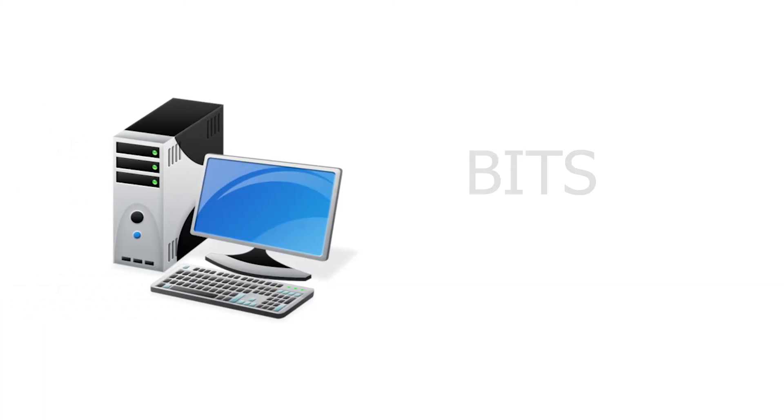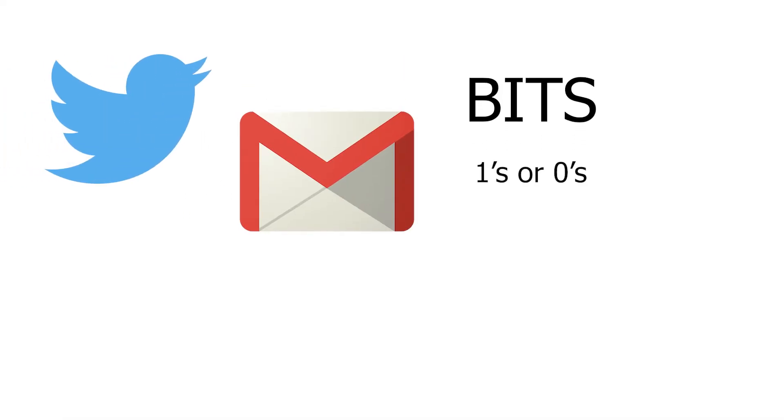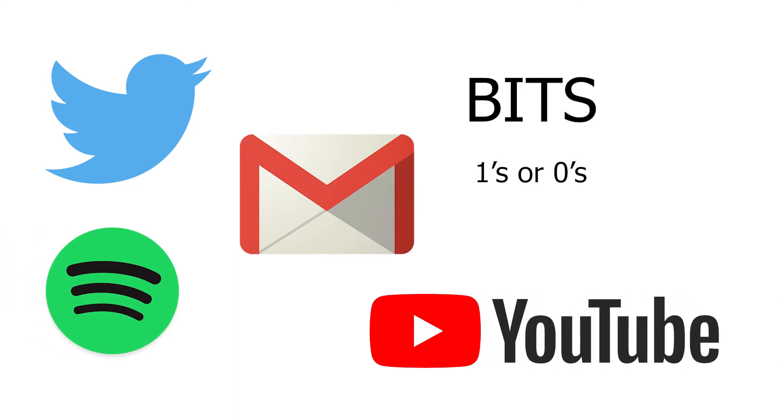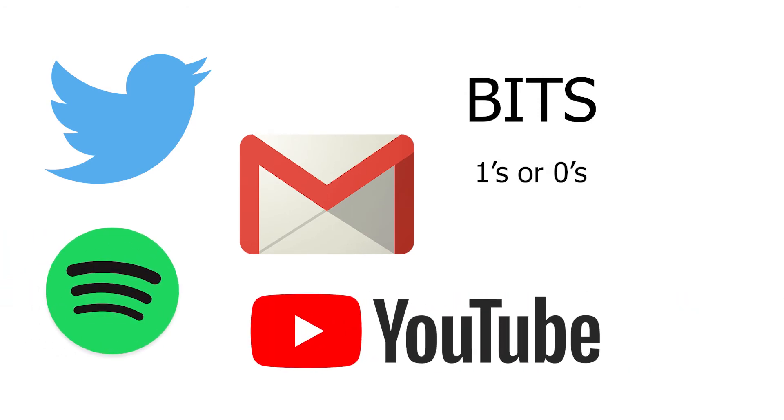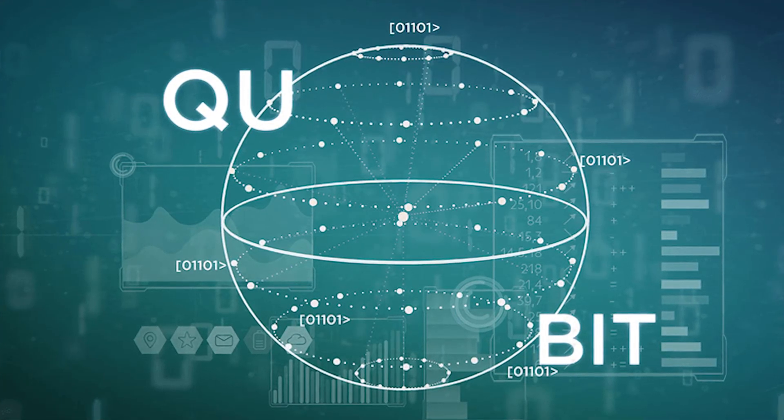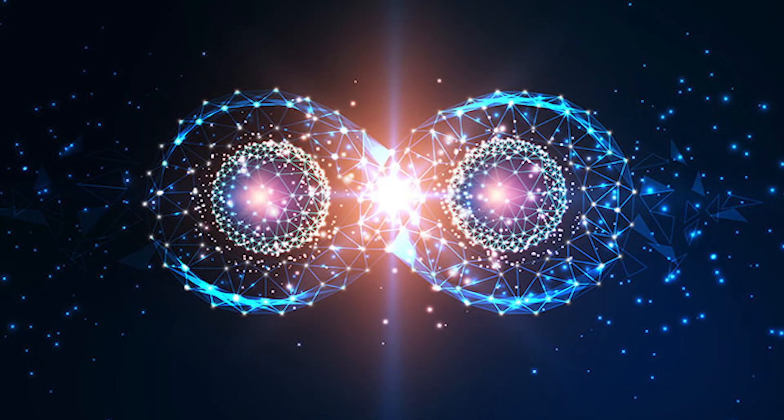Today's computers use bits, a stream of electrical or optical pulses representing ones or zeros. Everything from your tweets and emails to your Spotify songs and YouTube videos are essentially long streams of these binary digits. Quantum computers, on the other hand, use qubits, which are typically subatomic particles such as electrons or photons.